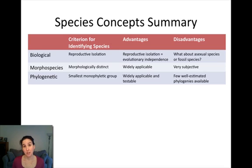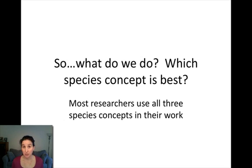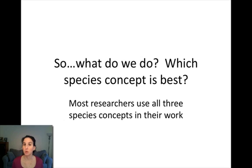What do most researchers do? We have these three different species concepts, all with advantages and disadvantages. Well, most of us as evolutionary biologists use a combination of all three. For my dissertation work, I used the morphological species concept, I did greenhouse studies to see if organisms I thought were separate species could interbreed, and I constructed a phylogenetic tree based on molecular and morphological data. I think that's the most conservative and best approach to identifying species.